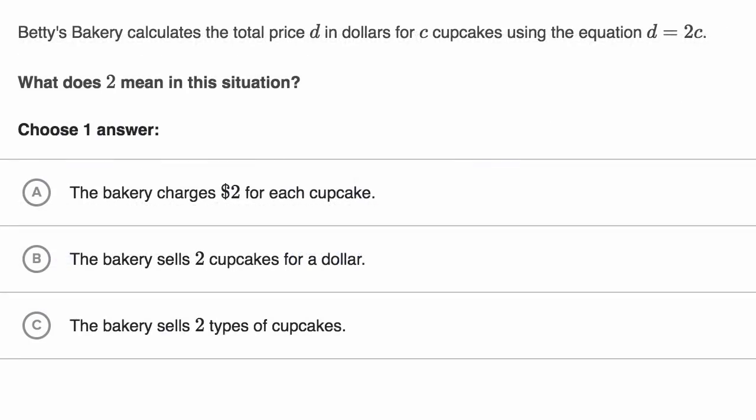Let's do another example. Betty's Bakery calculates the total price d in dollars for c cupcakes using the equation d is equal to two c. What does two mean in this situation? Pause this video and see if you can answer this question.